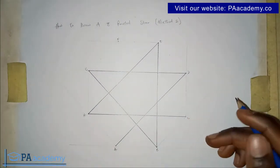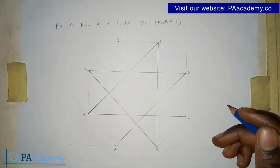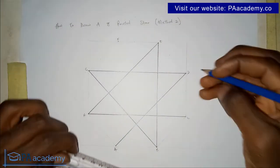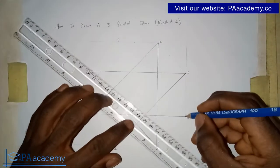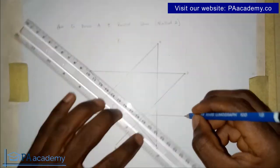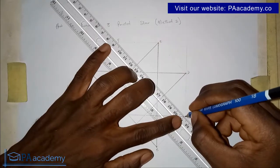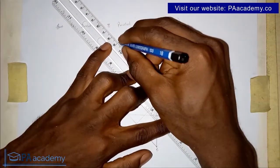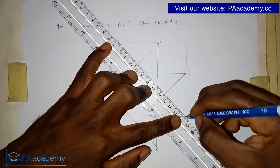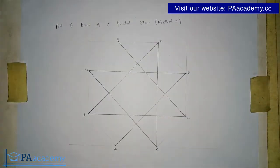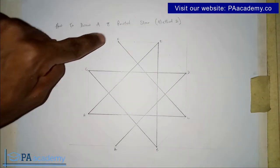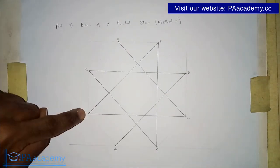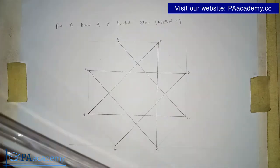Now from C, again we skip the next two and draw to vertex F — skipping D and E, going to the third one. Then with one more left: from F, we skip G and H, and go to the third one, which is A. And with that, we now have our 8-pointed star.